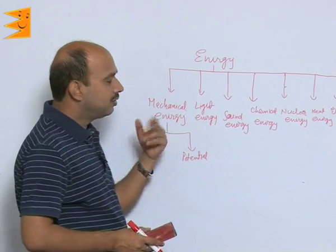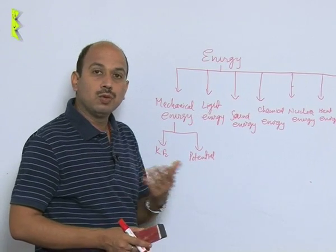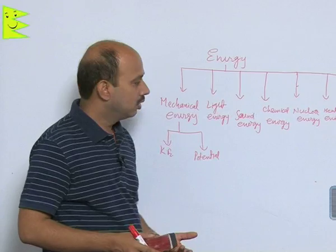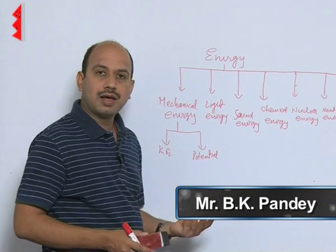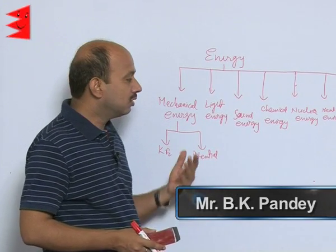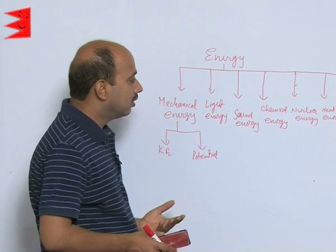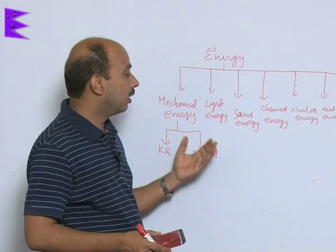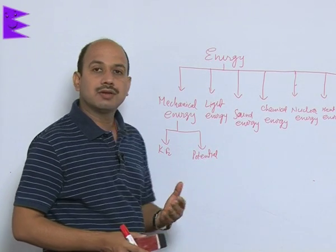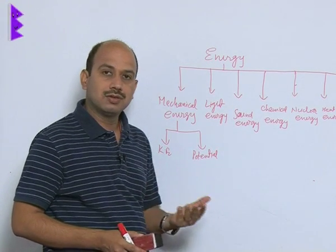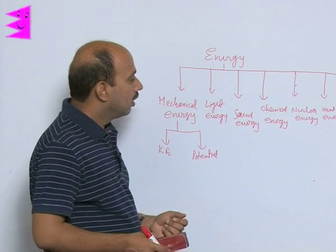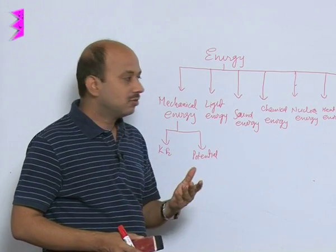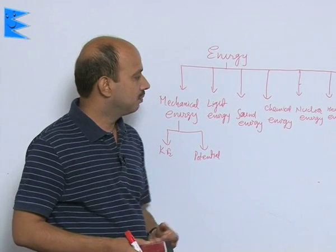Light energy — light is coming from the sun. We know the sun is the biggest source of energy. We can get a large amount of light, and by using this light energy we can see objects and also convert this light energy into electricity to do different kinds of work. Light and heat both come from the sun, and that is considered solar energy.